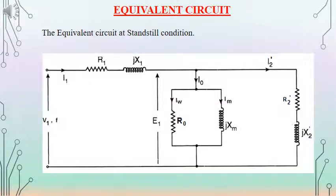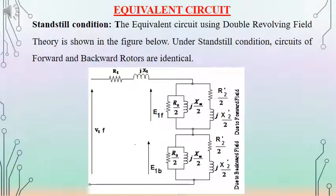The equivalent circuit at standstill condition is shown. R1 and X1 are the stator parameters. R2' and X2' are the rotor parameters referred to the stator, as in the case of three-phase induction motors and transformers. There is a parallel branch with elements R0 and Xm corresponding to the no-load condition. At standstill, since slip equals 1, the circuits corresponding to the forward and backward rotors are identical.